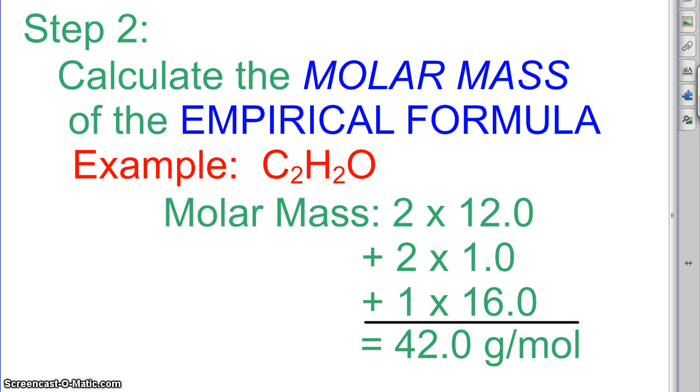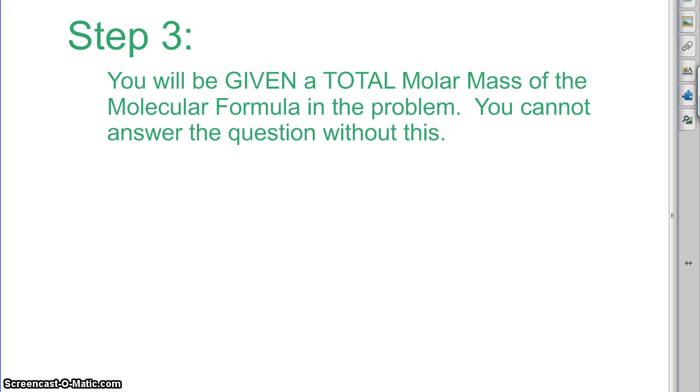Once you have that number, the molar mass of the empirical, you will also be given the total molar mass of the molecular formula in the problem. This will always be given. You won't be asked to find the molecular unless you're given this. It's just not possible to do. So that will be given in the problem. So let's just say that you were given that the molar mass of the molecular formula is 168.0 grams per mole.